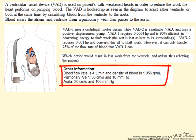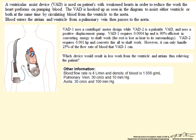So other information that we need to solve this includes the flow rate. In this case blood flow rate is 4 liters per minute and the density of the blood is 1.056 grams per milliliter.